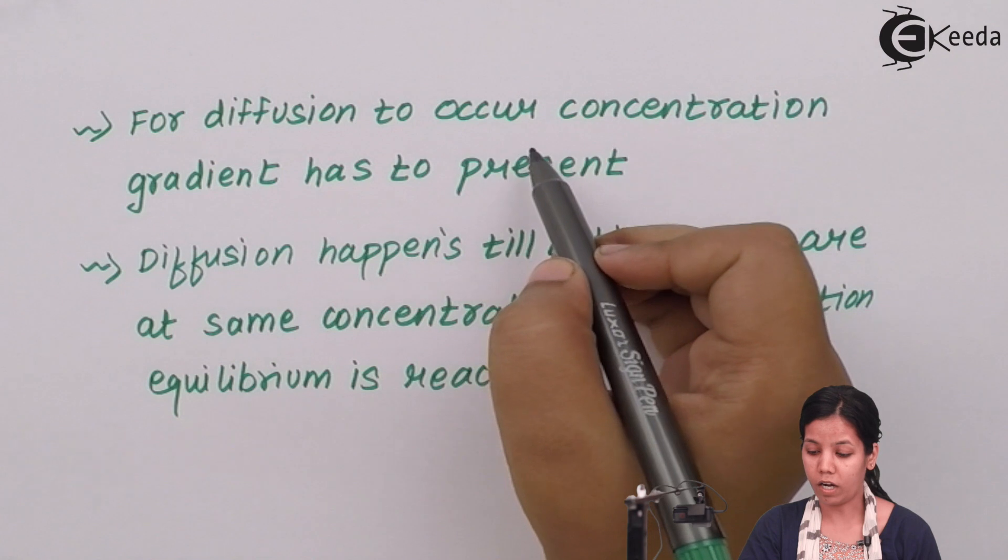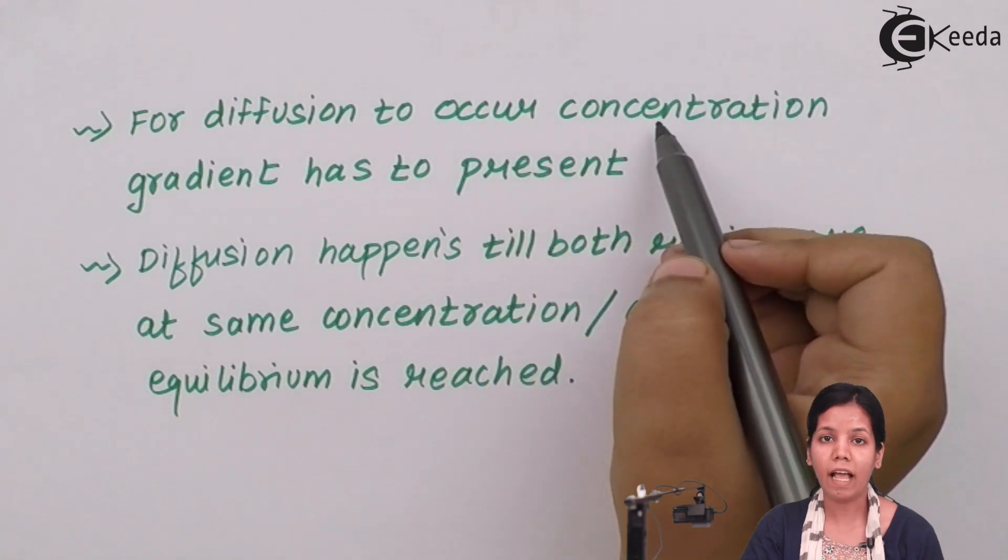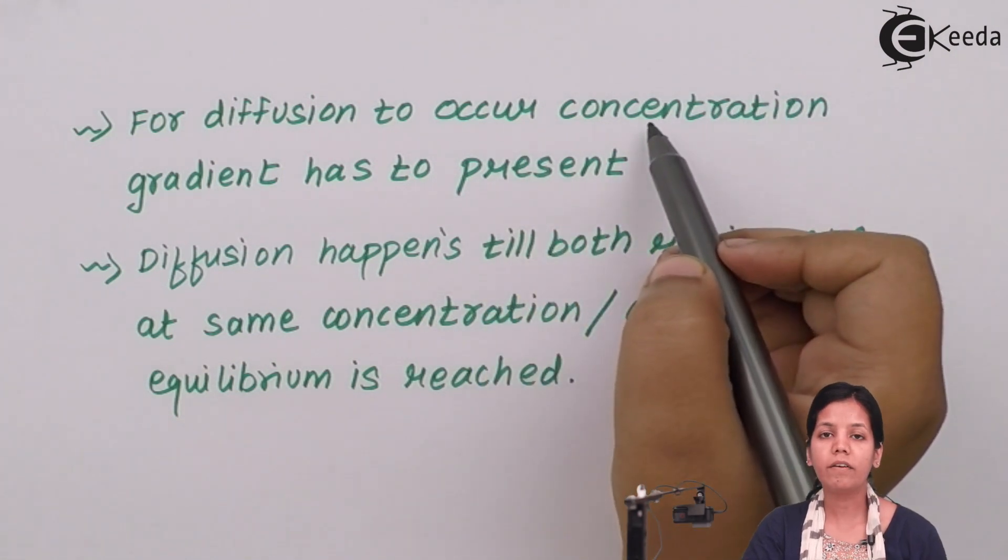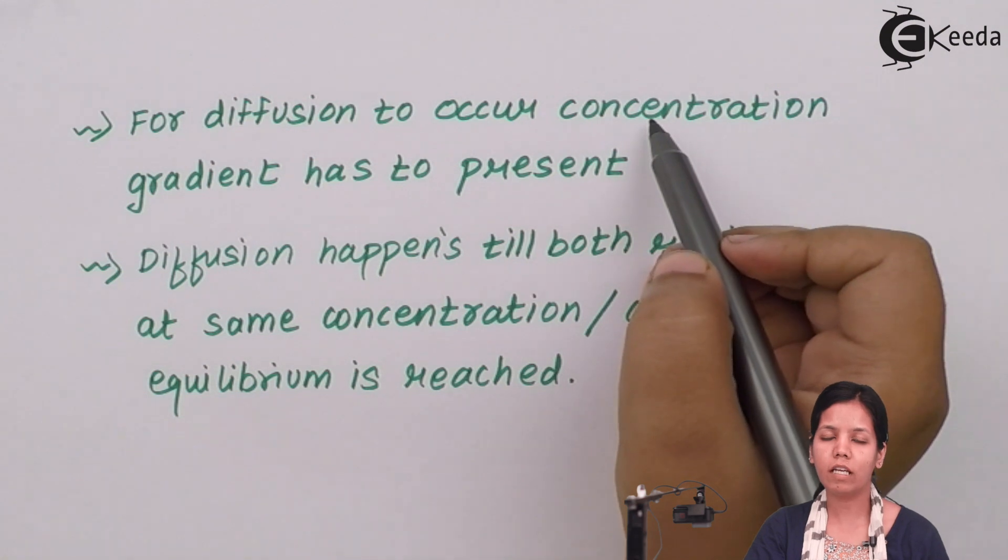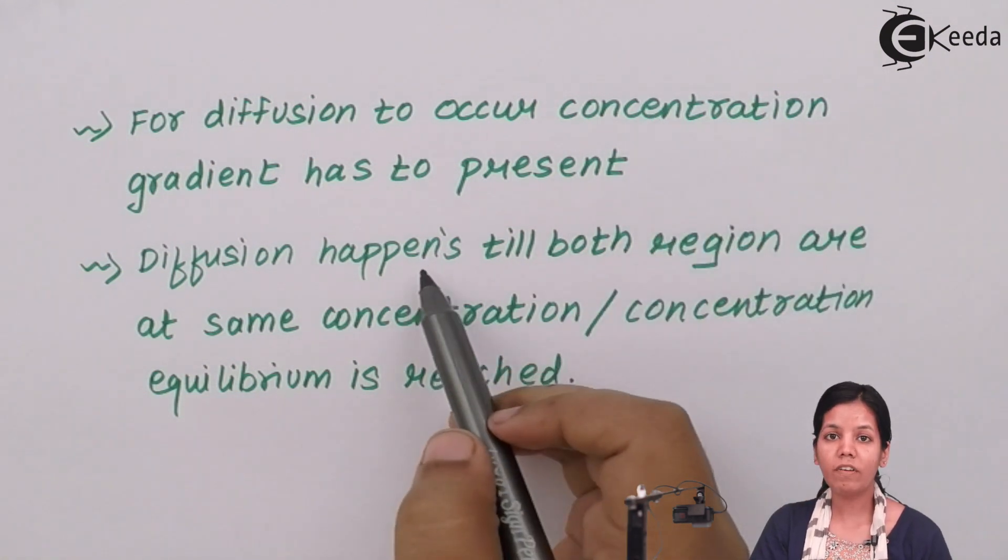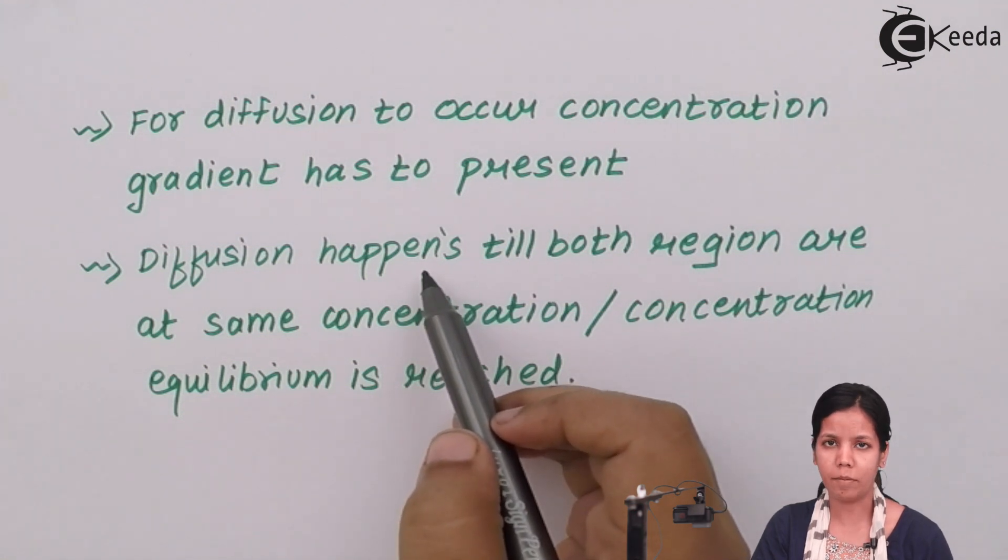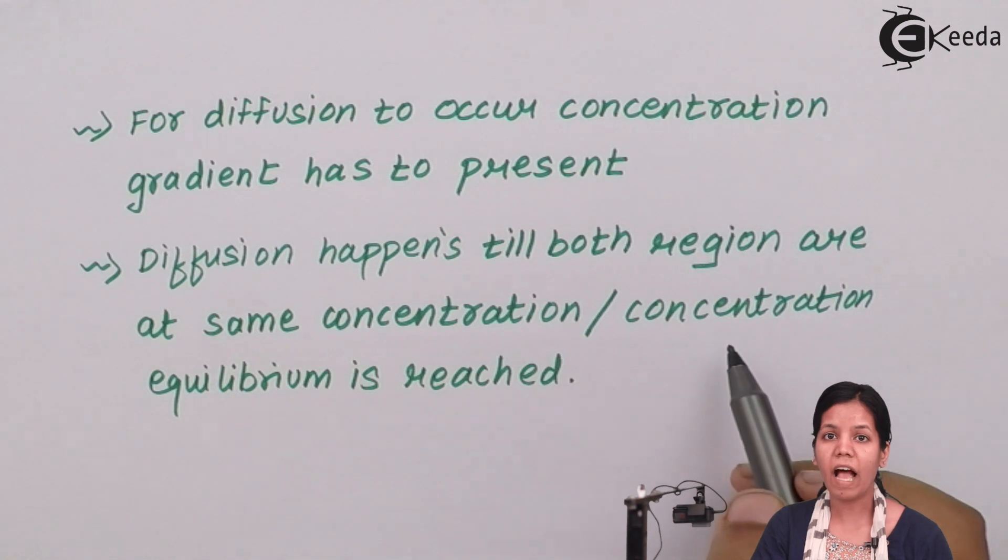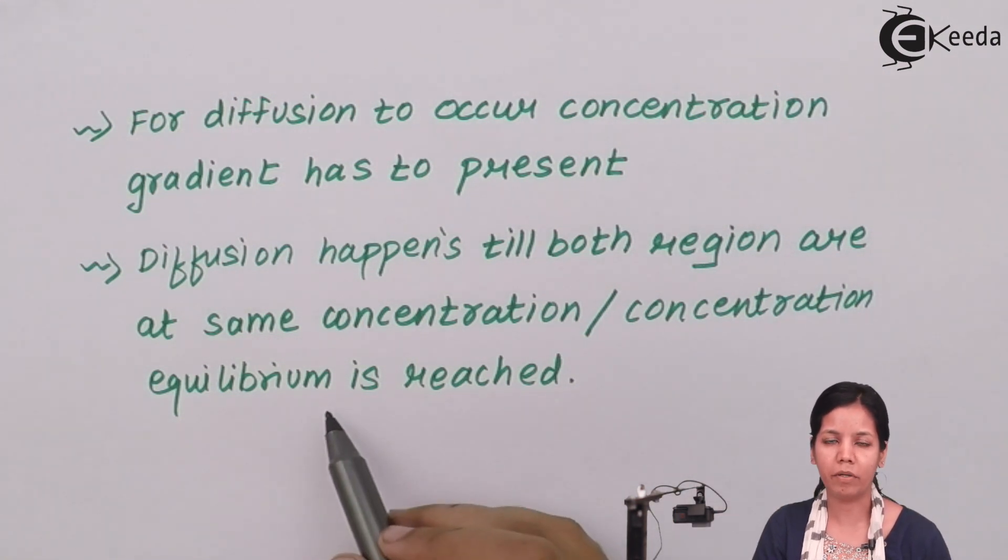For diffusion to occur the concentration gradient has to be present, i.e. differences in concentration is needed. Diffusion will happen until and unless both the concentrations are equidistant or both are same, that is both the concentrations are at equal parameters or you can say at equilibrium.